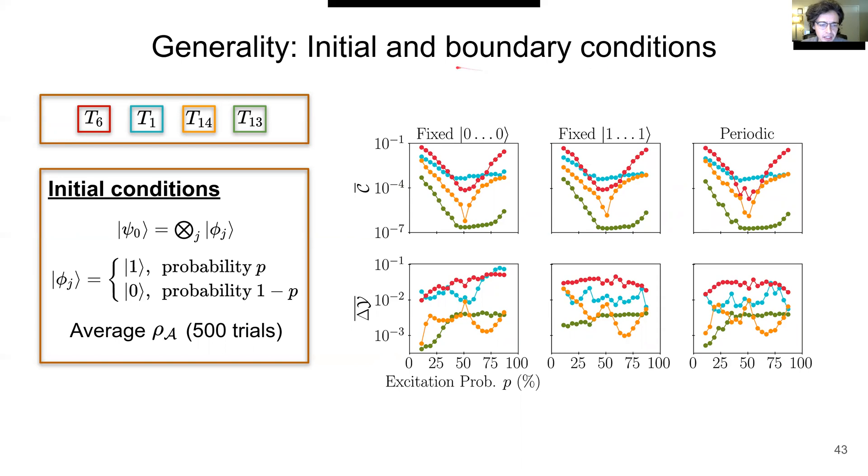The horizontal axis on each plot describes a different initial condition, which works as follows. Each site is initialized to either a 1 with probability p or a 0 with probability 1 minus p. We compute the subsystem density matrices for each initialization and average those results for 500 trials. As a function of the probability p, we see that it's the Goldilocks rule T6 which tends to maintain the highest clustering and disparity fluctuations for nearly all values of p. The notable exception is at the highest entropy state where there is equal probability of setting an initial qubit to a 1 or a 0.